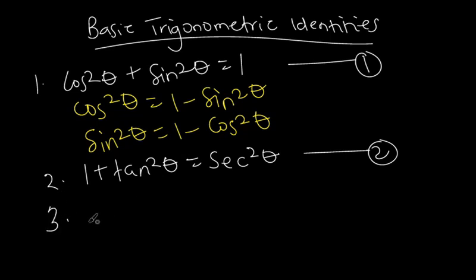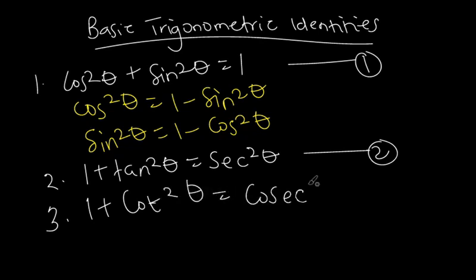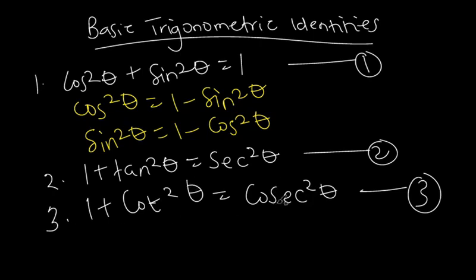The third and final identity we'll look at before solving questions is one plus cot squared theta is equal to cosec squared theta. You can make cot squared theta the subject here to get another expression involving cosec squared theta, which can also be useful or relevant when solving trigonometric equations or proving certain cases.